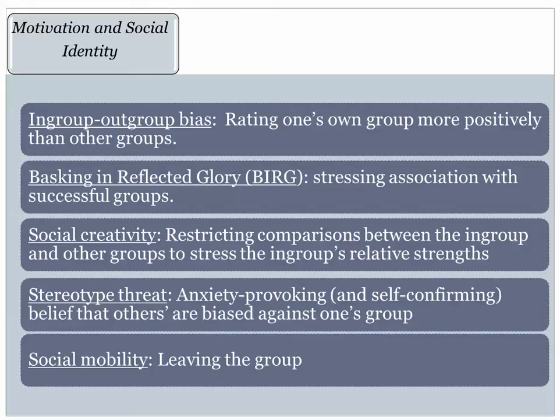Social creativity is the process where if our group fails relative to another group or seems to have lower status on one dimension, group members tend to find something else the group is better at. For example, if two teams compete and one fails, the failing group might say: 'We may have lost the game, but we played more fairly' or 'We made sure everyone played — we didn't just play our best players.' So in a sense, we're a fairer group, even though we lost.